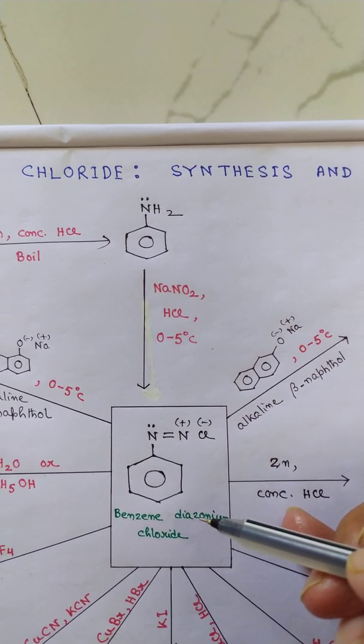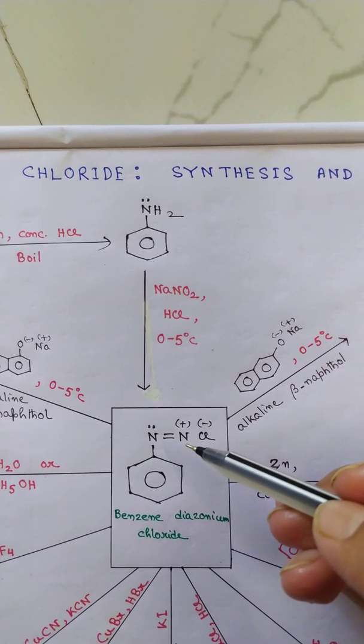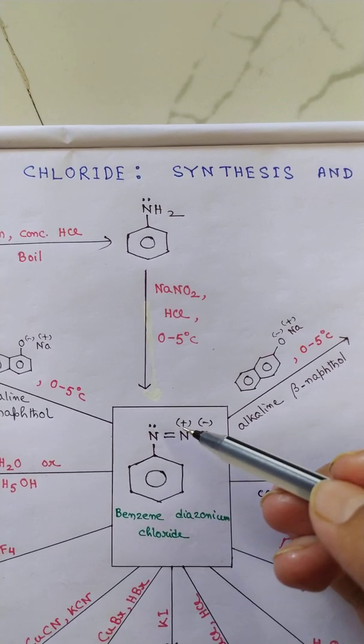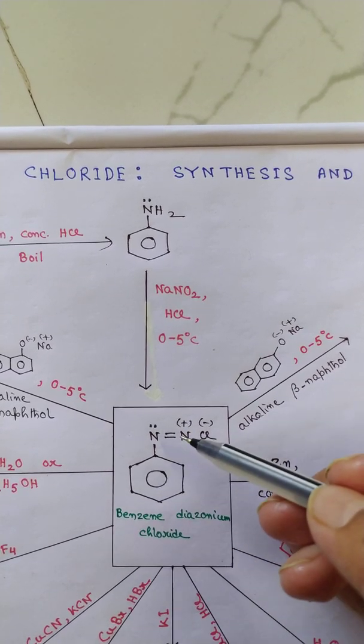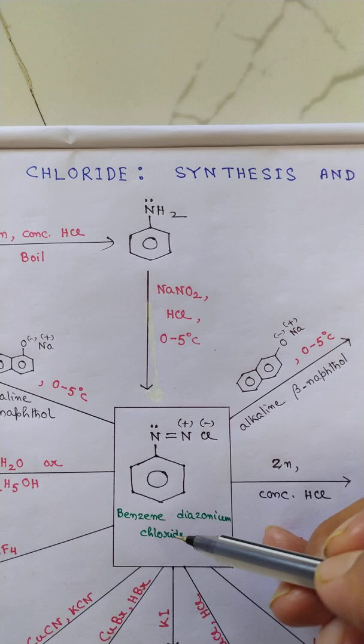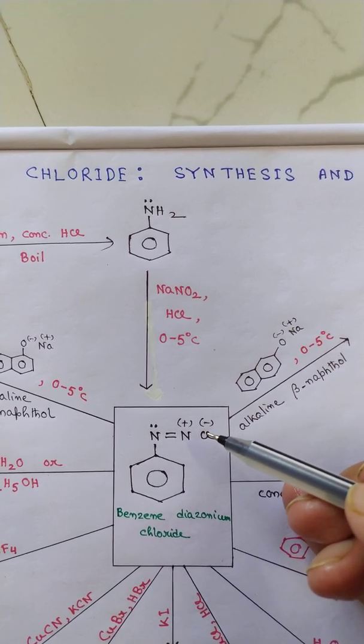Now how the name comes from: azo means nitrogen, so diazo, and onium means this plus, so it is a cation, and finally the salt Cl minus.